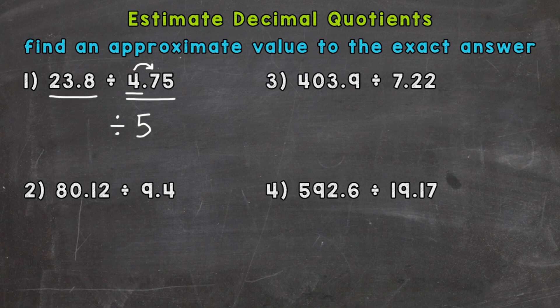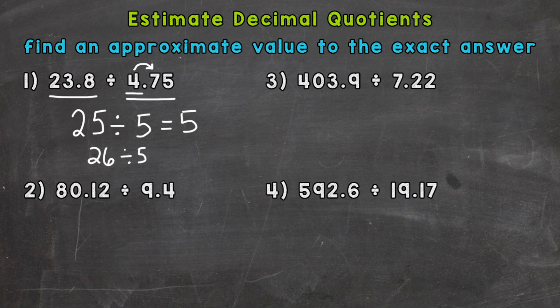Once I have that, I need to look at my dividend — the number we are dividing — and find a number close to 23.8 that can be divided by 5 without a remainder. Those are called compatible numbers. Our compatible number is 25, because 25 divided by 5 works out very easily. A counter example would be 26 — 26 divided by 5 is a real math problem, but those aren't compatible numbers because they don't work out nicely.